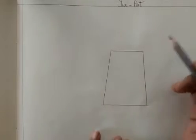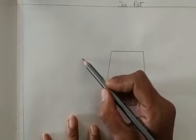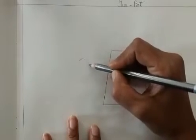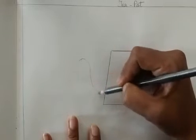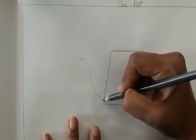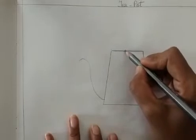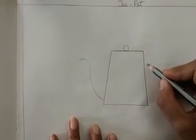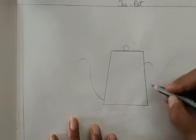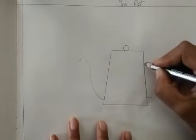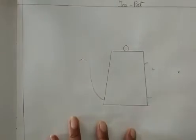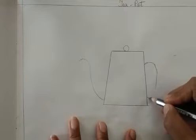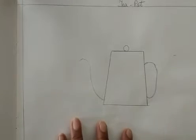Now step number 2. We will draw one line like this. Here, a small circle. And here we will draw like this.